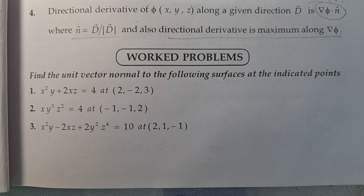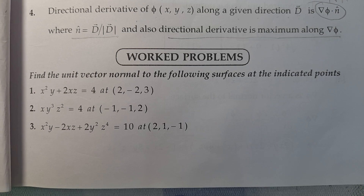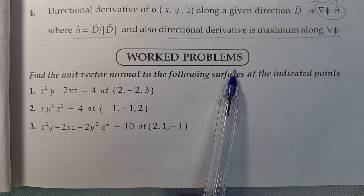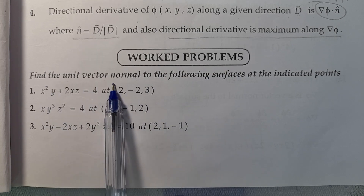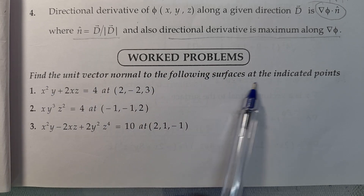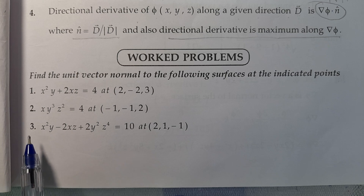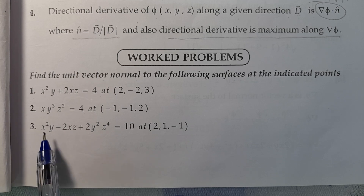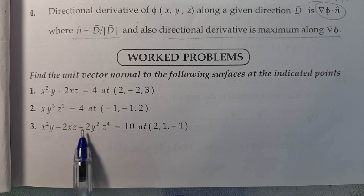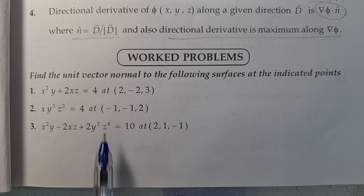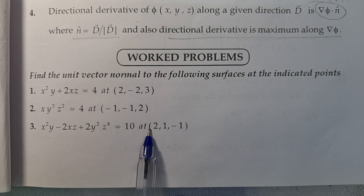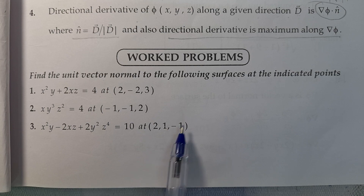Namaste. Subject: Engineering Mathematics. Module: Vector Calculus. Article No. 1.12 — Gradient, Divergence and Curl. Worked Problems: Find unit vector normal to the following surfaces at the indicated points. Third problem: x squared y minus 2xz plus 2y squared z to the power of 4 equals 10, at the point (2, 1, minus 1).